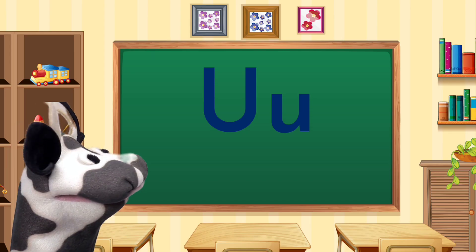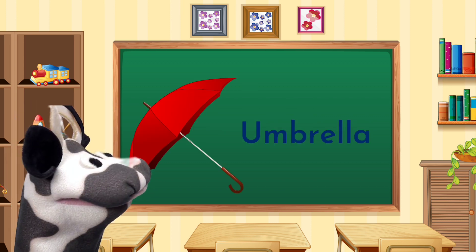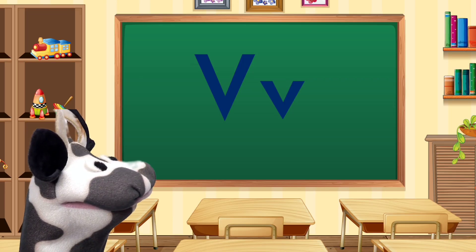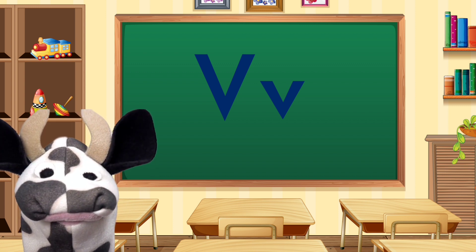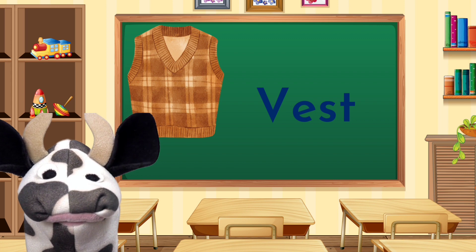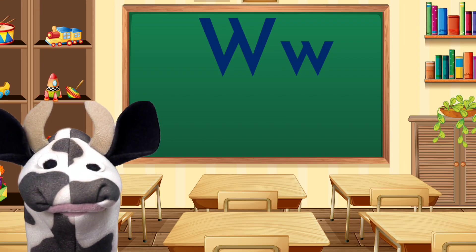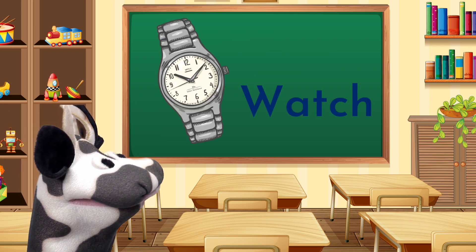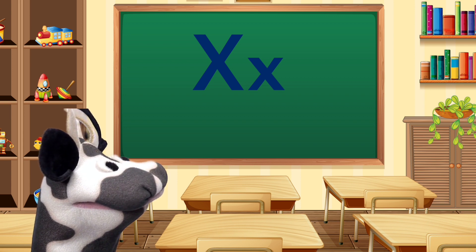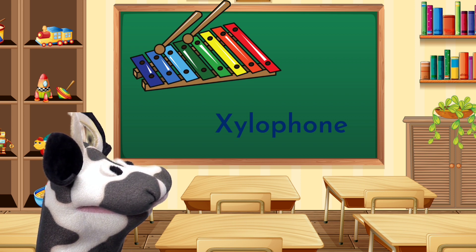U. U for umbrella. V. V for vest. W. W for watch. X. X for xylophone.